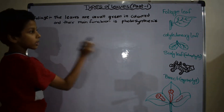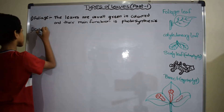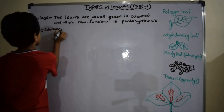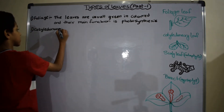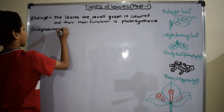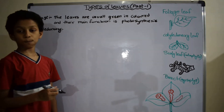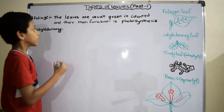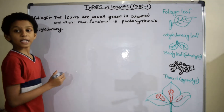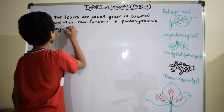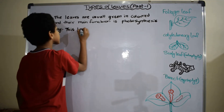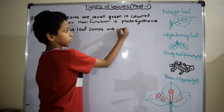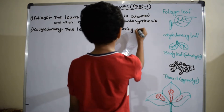Second one is cotyledonary leaves. This leaf comes out during germination and helps in nutrition until the first leaf is formed.